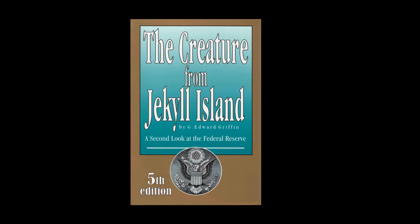Part 2 of the book focuses on the creation of the Federal Reserve. Griffin describes how a group of powerful bankers, including J.P. Morgan, met on Jekyll Island off the coast of Georgia in 1910 to discuss the creation of a central banking system. He explains how these bankers were able to convince Congress to pass the Federal Reserve Act in 1913 and how the Federal Reserve has operated since then.